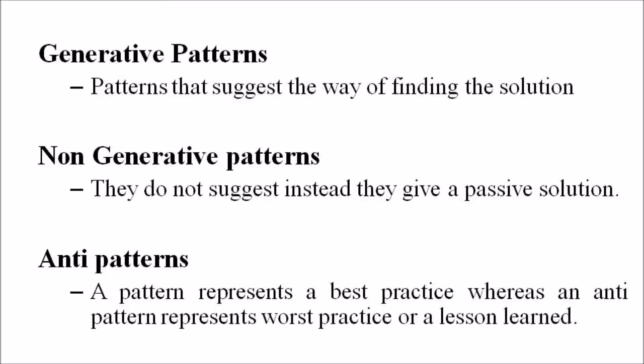Some other types of patterns include generative patterns, non-generative patterns, and anti-patterns. Generative patterns suggest the way of finding the solution, while non-generative patterns do not suggest — instead they give a passive solution and cannot be used in every situation. Finally, anti-patterns: a pattern represents a best practice, whereas an anti-pattern represents the worst practice or a lesson learned. Anti-patterns come in two varieties: those describing a bad solution to a problem that resulted in a bad situation, and those describing how to get out of a bad situation and proceed to a good solution.